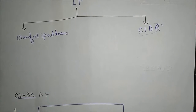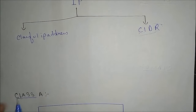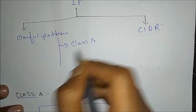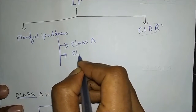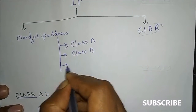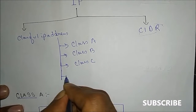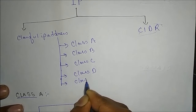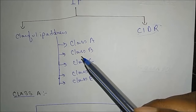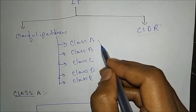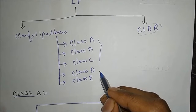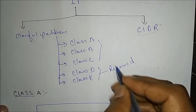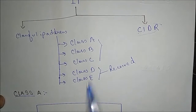Classful IP addresses are divided into five types: Class A, Class B, Class C, Class D, and Class E. Among these five, only A, B, and C are used. Class D and Class E are reserved and not used.